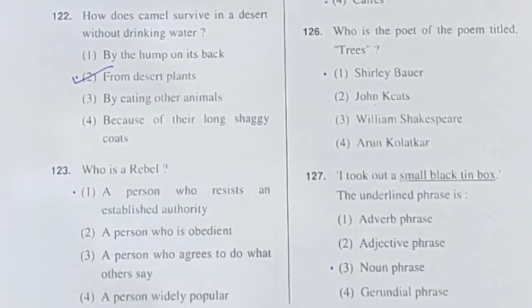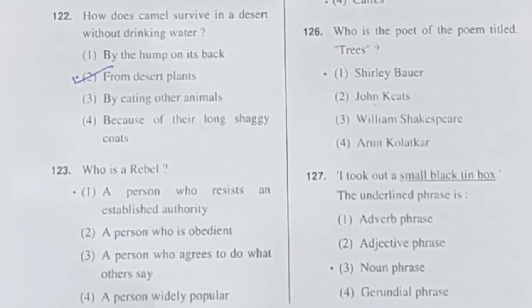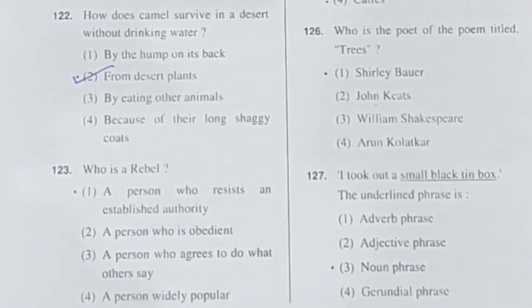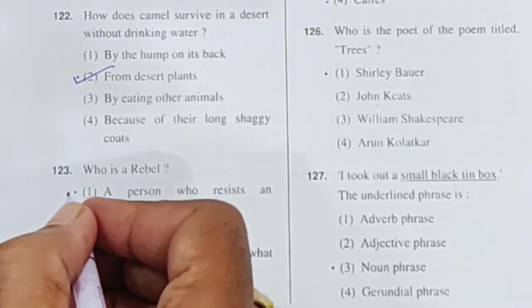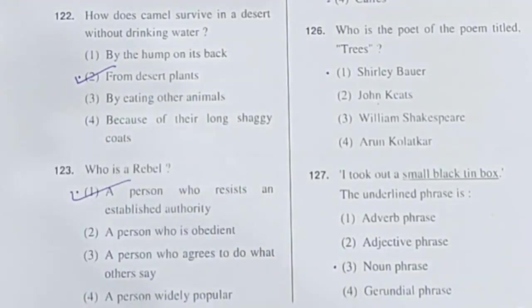Question 123: Who is a rebel? A rebel is a person who resists an established authority — one who opposes or resists authority. Option 1 is correct.